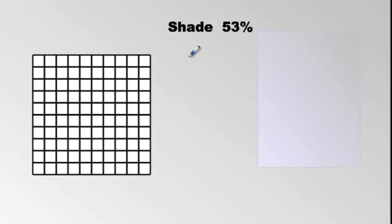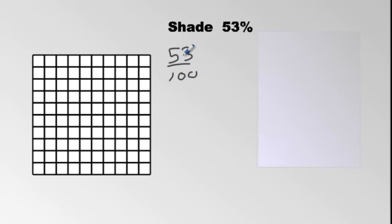A percent symbol simply states that the number is out of 100. So 53% can be written as 53 out of 100. That means you've got 100 things and you've got to shade 53 of them. We have 100 tiles — it's 10 by 10 — and we've got to shade 53 out of those 100.